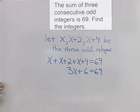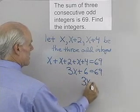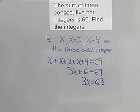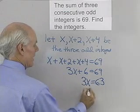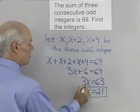If I add negative 6 to both sides, I'll end up with 3x is equal to 63. Now I'll divide both sides by 3 and end up with x is equal to 21. So x equals 21 is the first of our three odd integers.